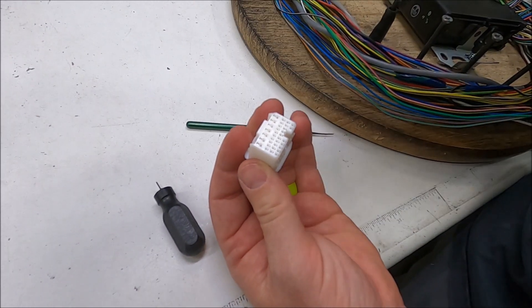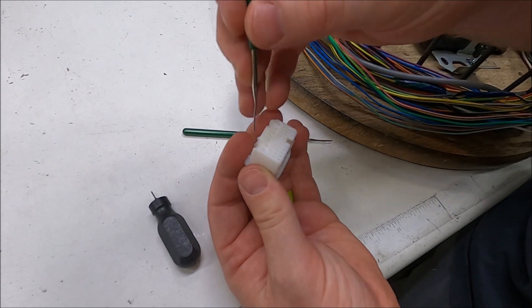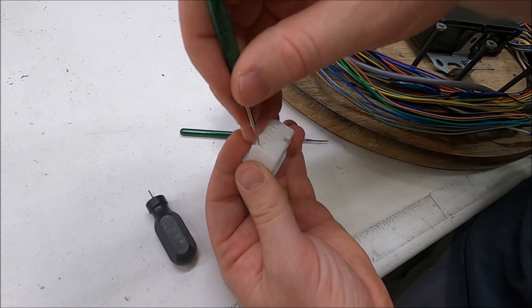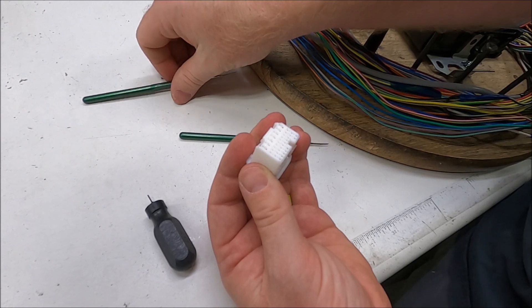And then for the upper rows, it's the exact same as we did for the other one. Push the terminal release tool in, lift the tab, slide it out the back.